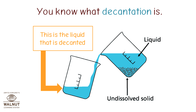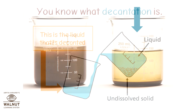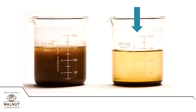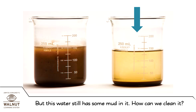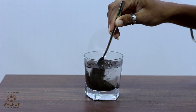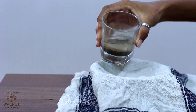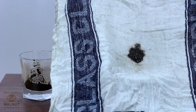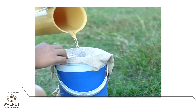You know what decantation is. This water after decantation is clearer than the muddy water we started with, but it still has some mud in it. How can we clean it? We can pass it through a fine cloth to remove the mud. This is known as filtration.